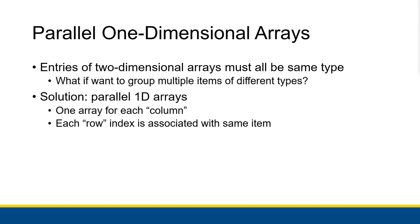Instead, we need parallel one-dimensional arrays, where one array is associated with each column and every row's index is going to be associated with the same item. So we'd have two associated arrays: one array would be all of the states in order — let's say alphabetical order — and the other array would have each of those states' rainfalls in the same order. California's index in the name array would be the same index as the amount of rain California got in the amount of rain array. They're parallel, kind of sitting next to each other, lined up, both describing the same thing.